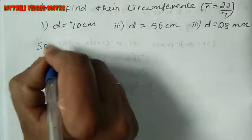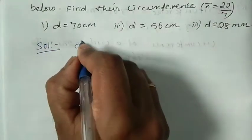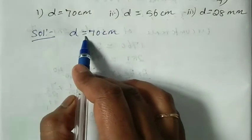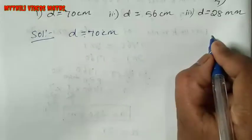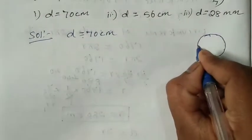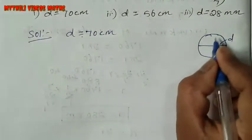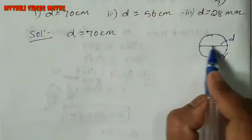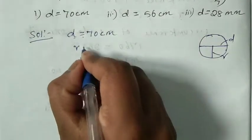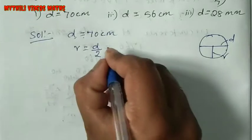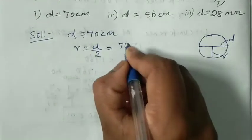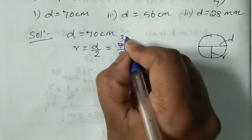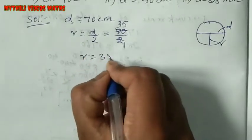So now we will see the first subdivision: D is equal to 70 cm. Diameter is given as 70 cm. Now we have diameter, so radius is equal to D by 2. That is 70 divided by 2. Cancel: 7 into 2 is 14, remainder gives radius equal to 35 cm.